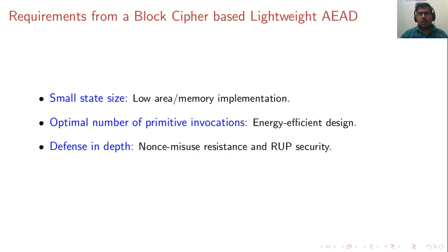For example, if the adversary can repeat the nonce, and the construction is still secure, we say it is nonce-misuse resistant. Another important property is RUP security, where the adversary can get unverified plaintext — even before the complete plaintext is verified at the decryption end. A scenario where this arises is when the memory buffer is small and we have to release some unverified plaintext. It would be good if a construction can be proved to be RUP secure.